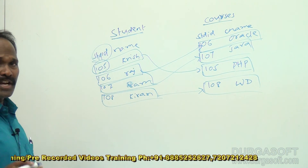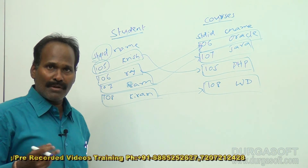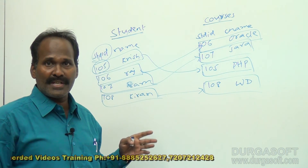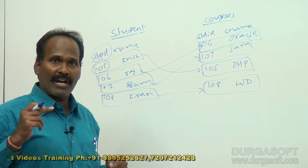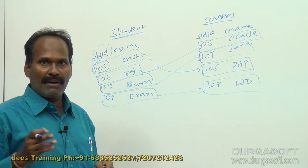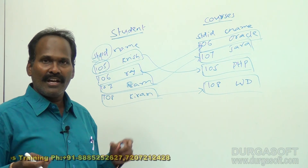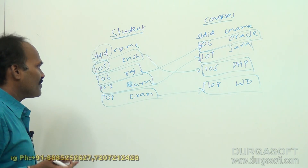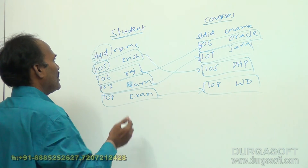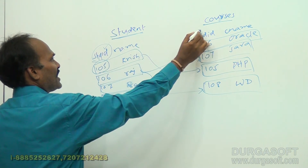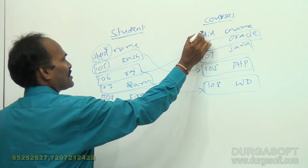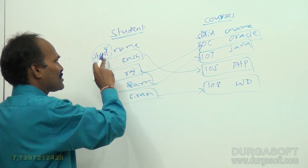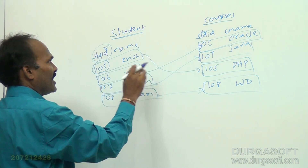Like this, we can use a JOIN concept to merge or integrate two tables. This kind of JOIN is called an equi-JOIN. In equi-JOIN, we must have a common column, and only when we have a common column can we apply the equal-to operator. The common column in these two tables is student ID - student ID is present in the student table and also in the courses table. Using this student ID column, we can JOIN these two tables.